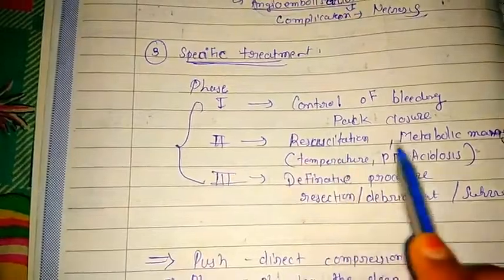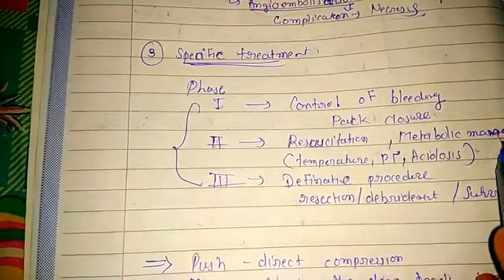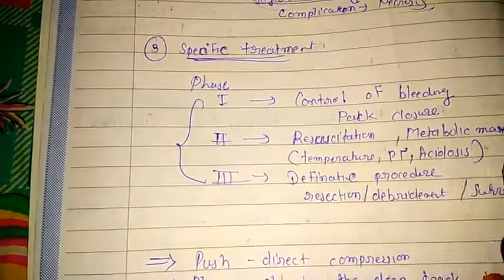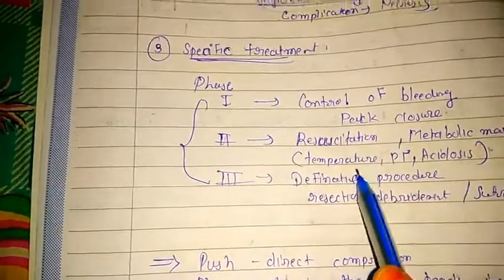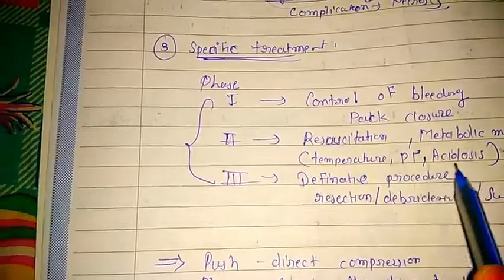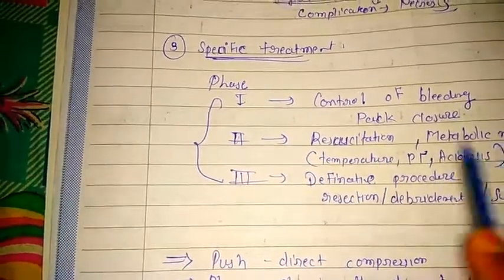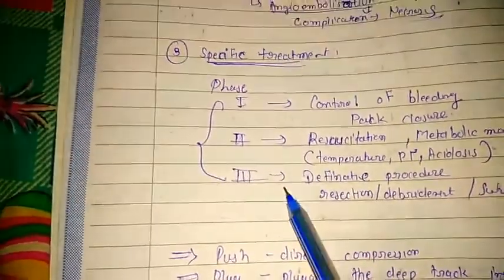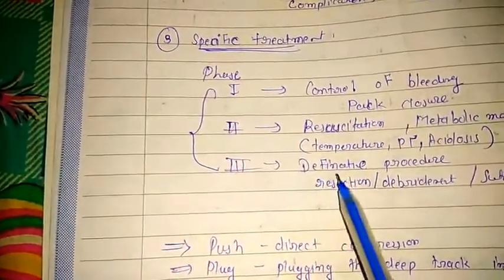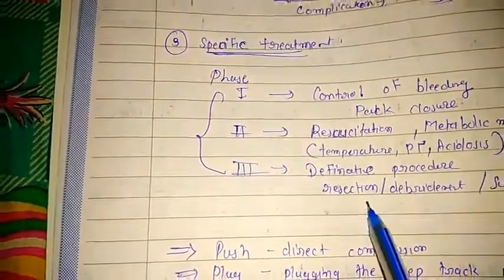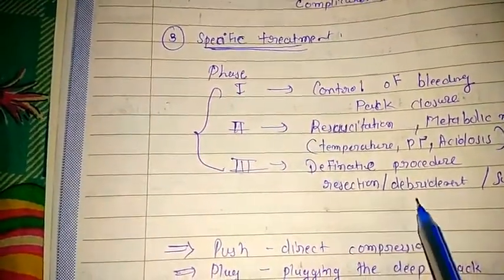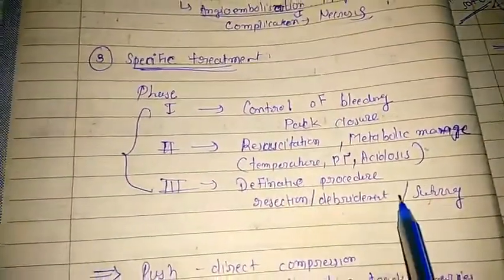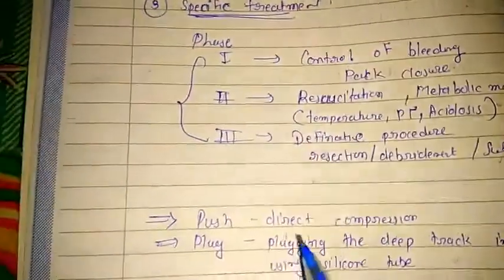Then resuscitation and metabolic management: temperature, prothrombin time, and acidosis should all be managed. The first definitive procedure step includes resection, debridement, or suture as appropriate.